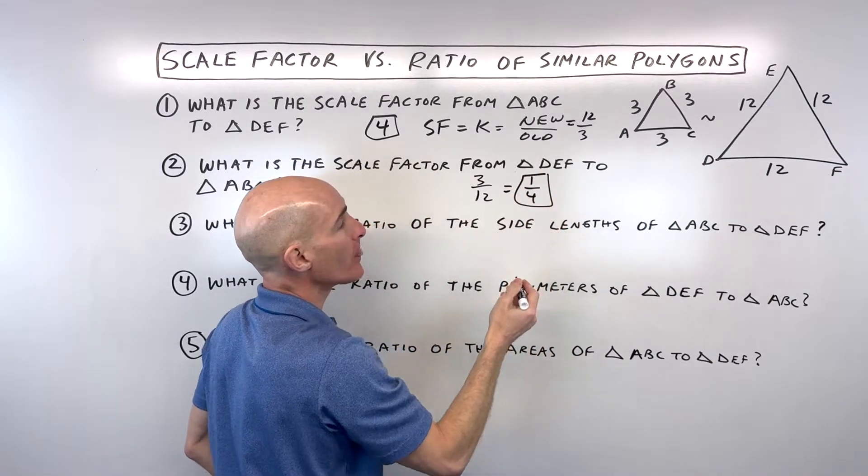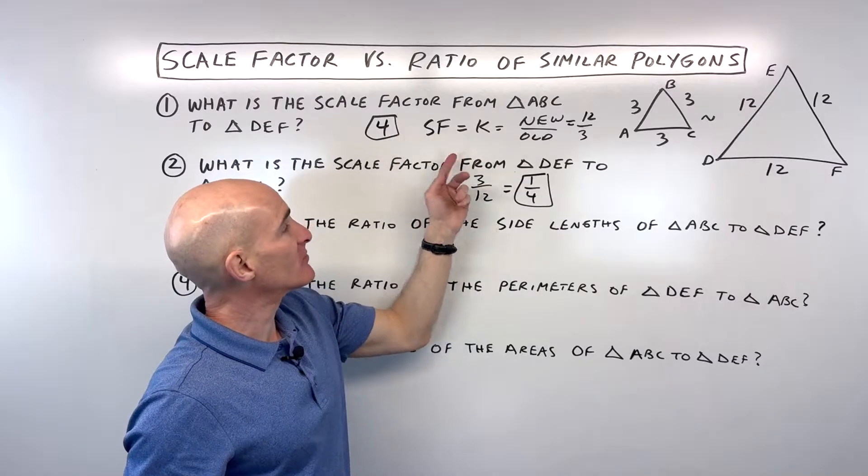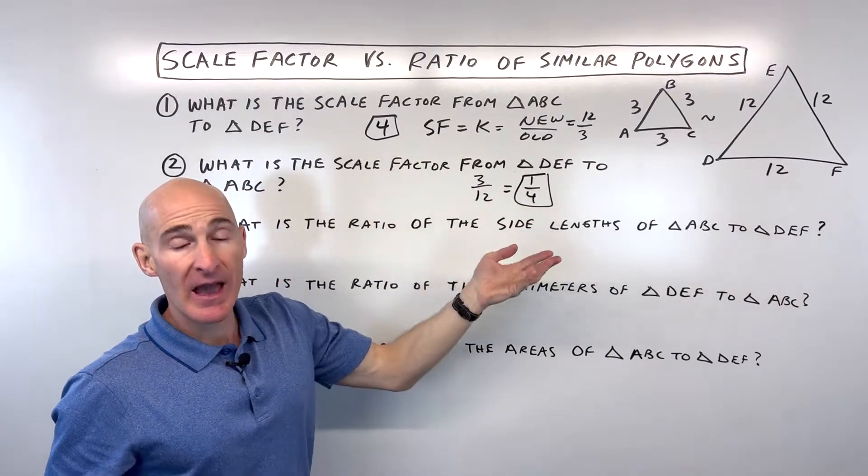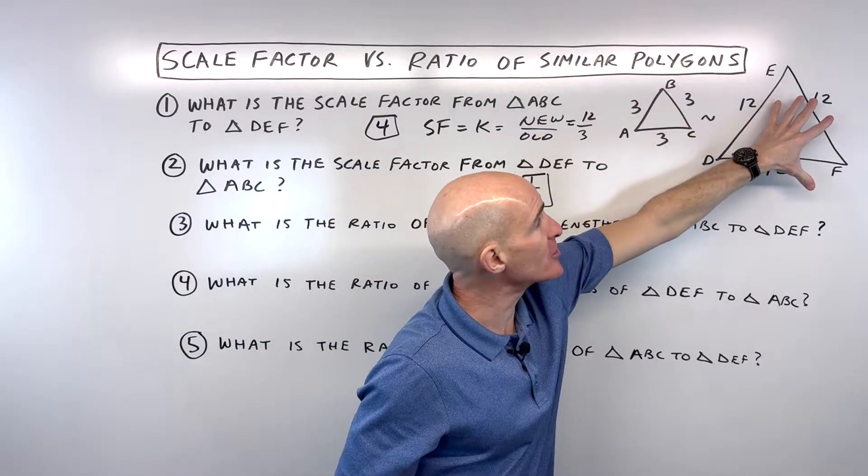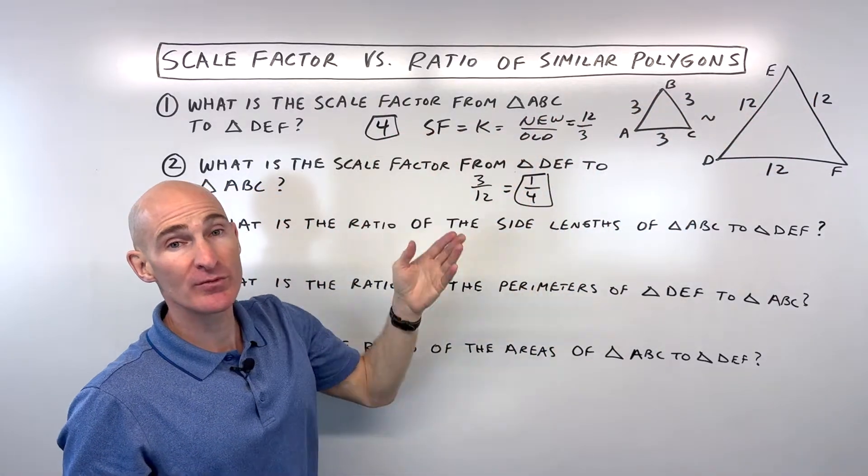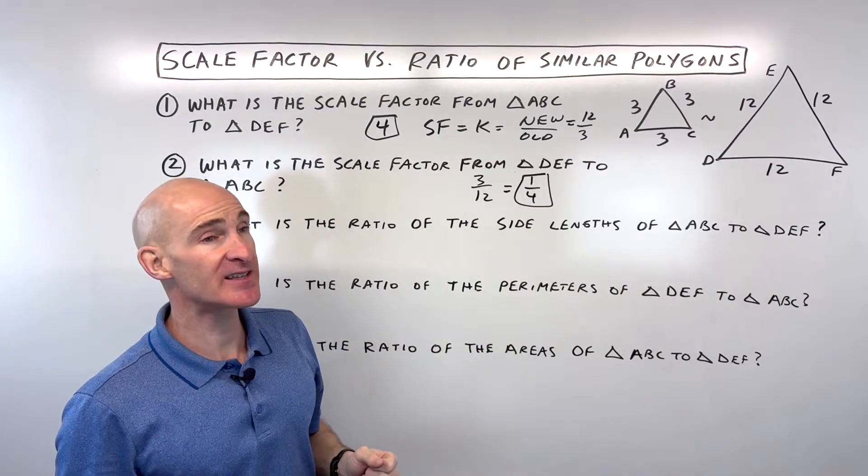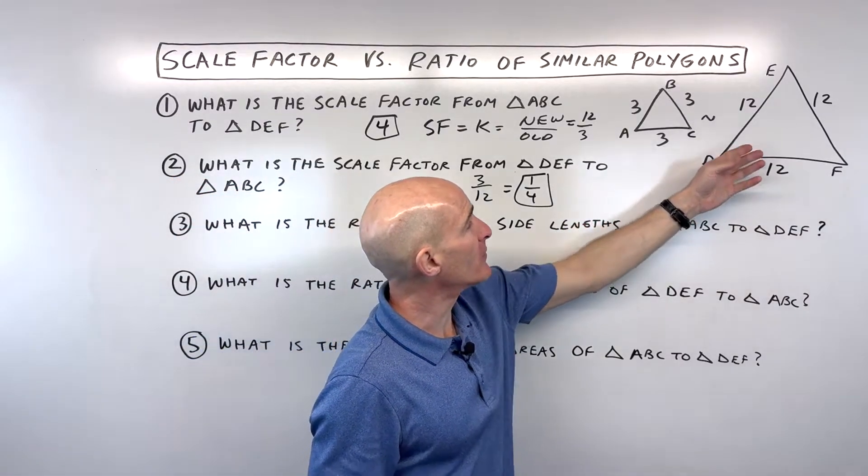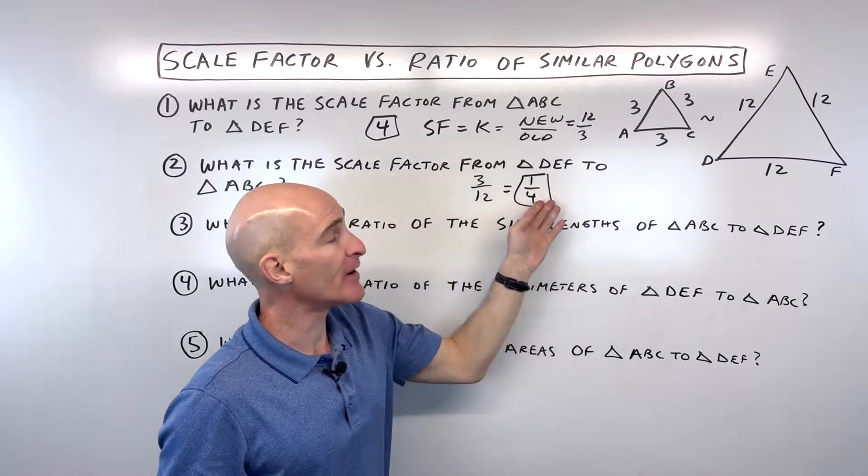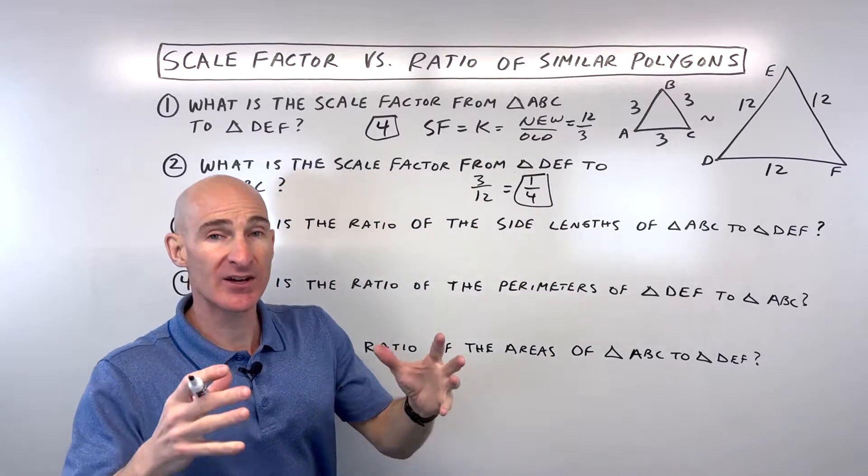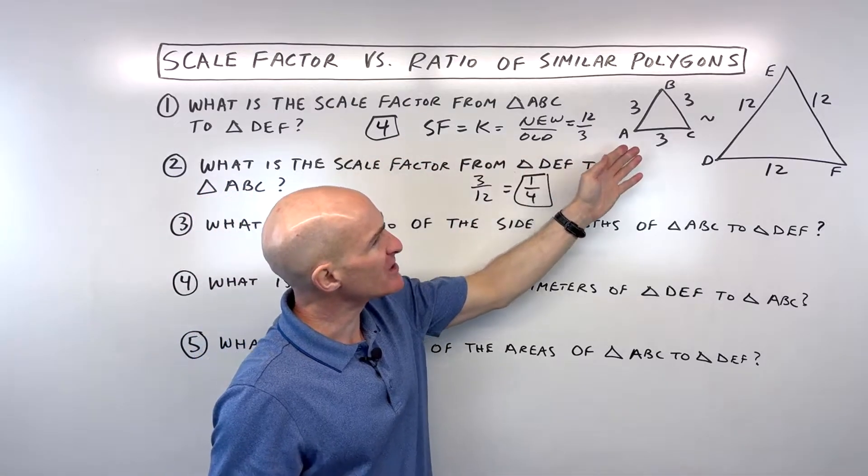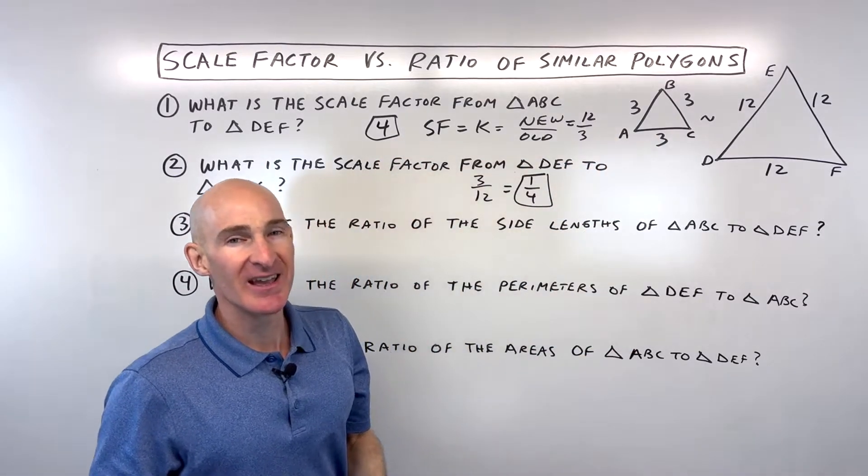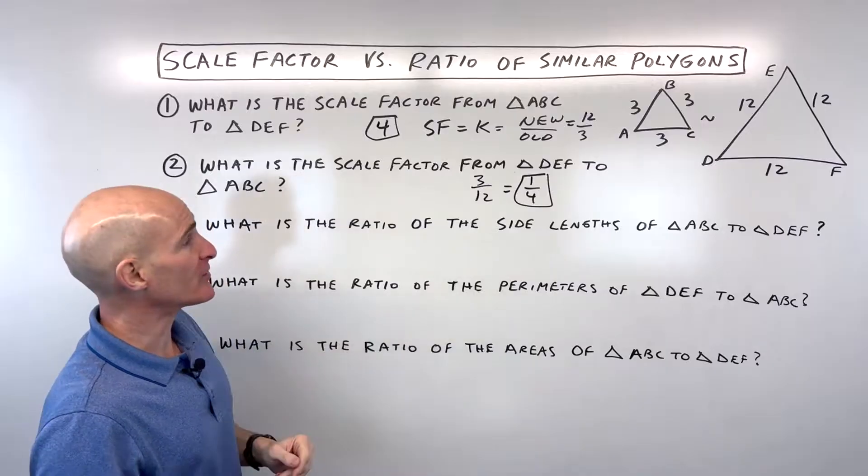Now, you might be saying, Mario, aren't these just reciprocals of each other? Yeah, they are, and one way that you can tell if you're on the right track is because if you're going from smaller to larger, this scale factor should be greater than 1. That indicates that it's an enlargement. If it's going from larger to smaller, that scale factor should be between 0 and 1. That tells you it's a reduction. So if you get the number, and you look, and you say, well, this doesn't make sense, you can kind of take the reciprocal and get the correct answer.